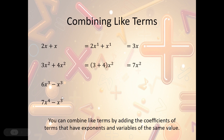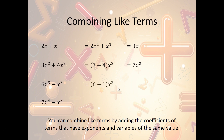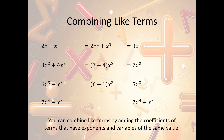We can do it with subtraction as well. So we have 6x³ minus x³. Same variable, same power, so we subtract: 6 minus 1 is 5x³. Now we have 7x⁴ minus x³. Same variable, but this time they do not have the same power. So we cannot combine them. It just stays 7x⁴ minus x³.